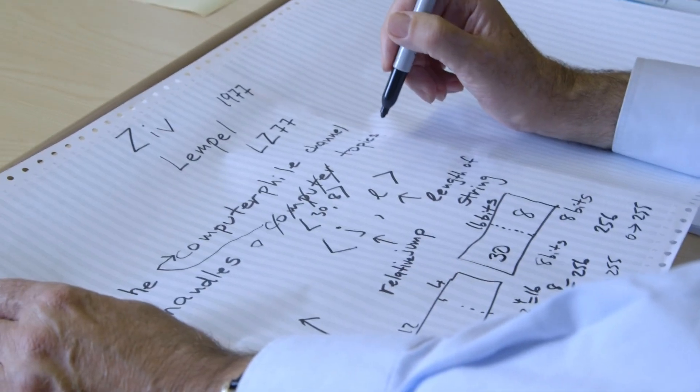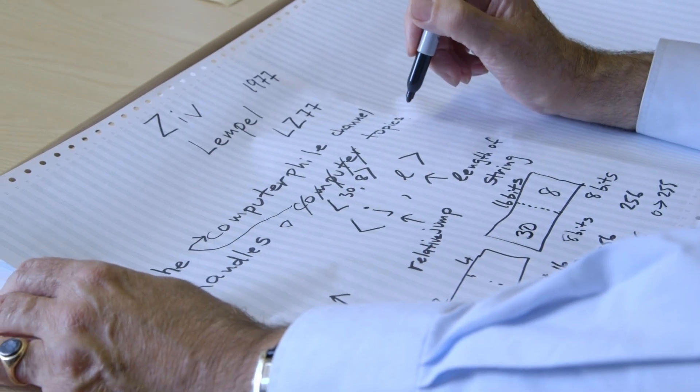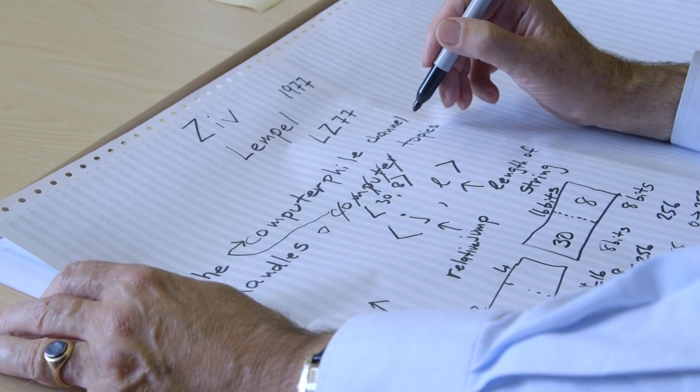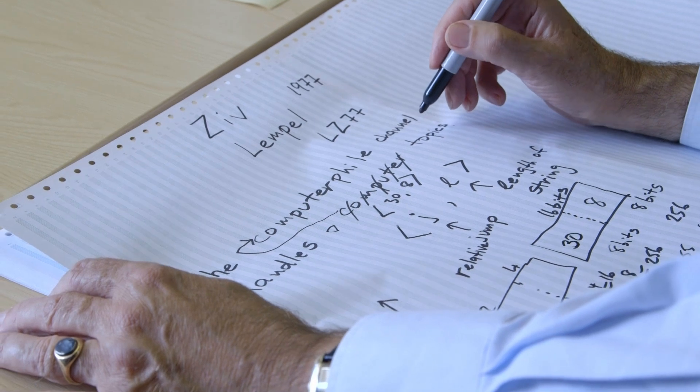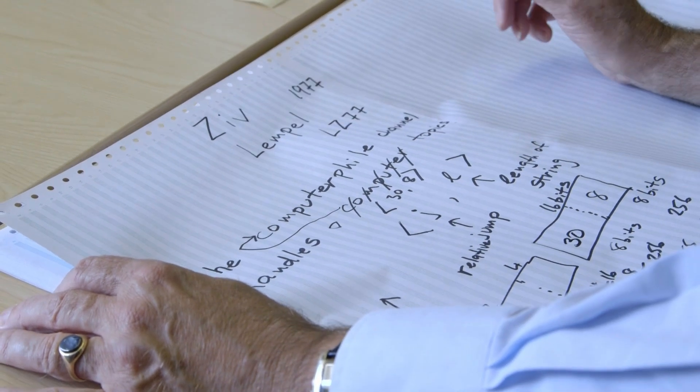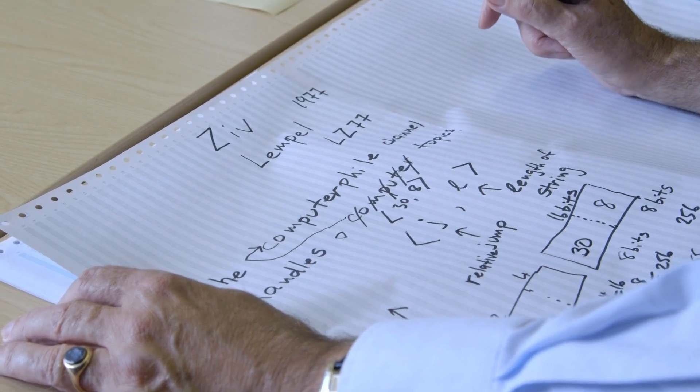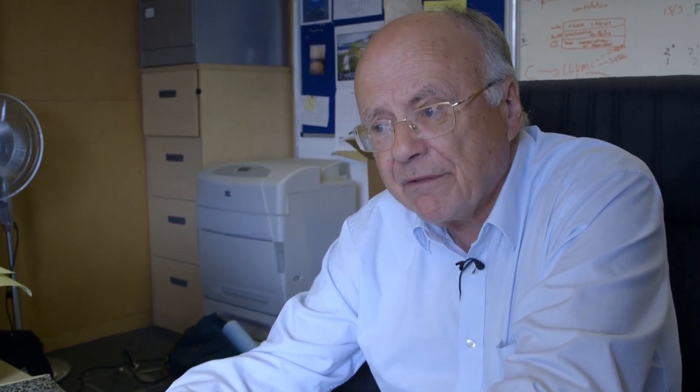The interesting thing is that Lempel-Ziv is doing compression and doing a pretty good job. If you look at Lempel-Ziv compressed text, it's almost routinely compressible down to about 20% of its size using techniques like this. Text is very compressible stuff because it's actually very, very predictable, as indeed Claude Shannon found out.